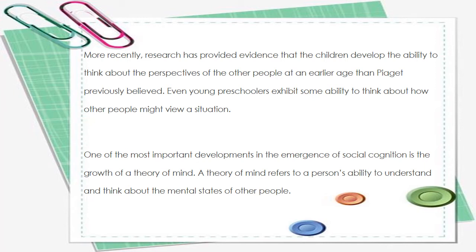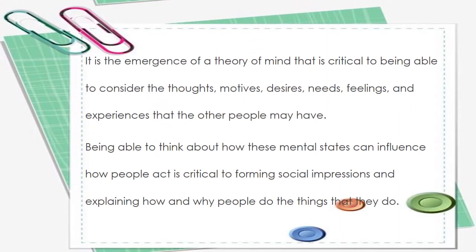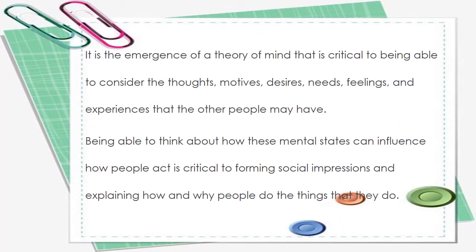One of the most important developments in the emergence of social cognition is the growth of a theory of mind. A theory of mind refers to a person's ability to understand and think about the mental states of other people. It is the emergence of the theory of mind that is critical to being able to consider the thoughts, motives, desires, needs, feelings, and experiences that other people may have.